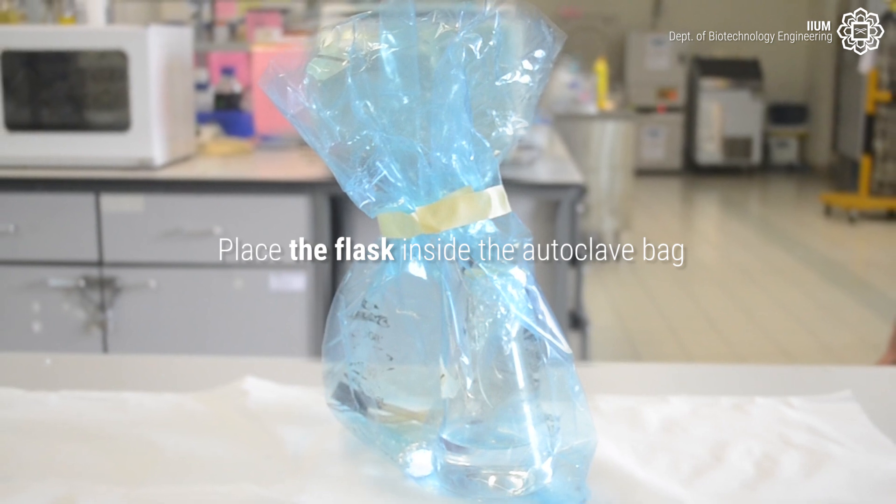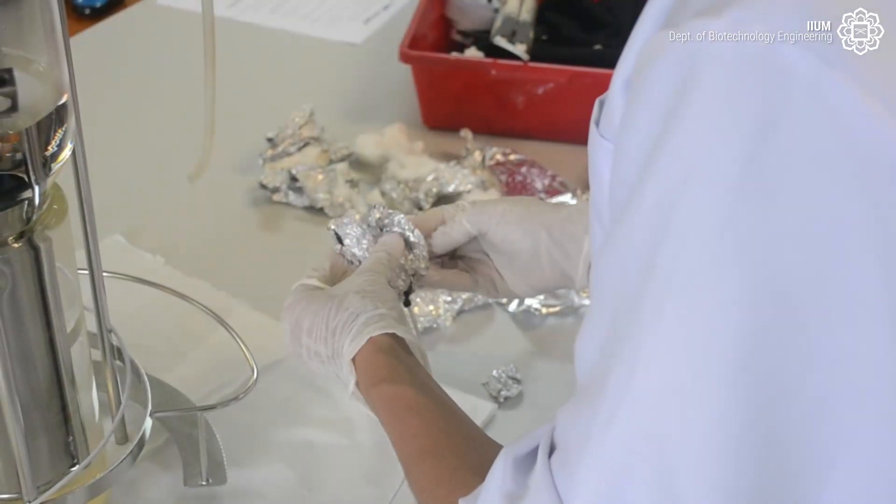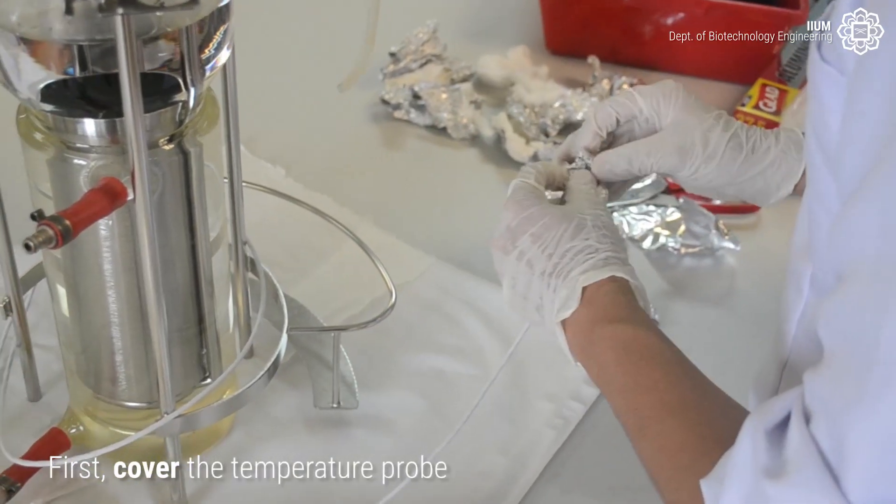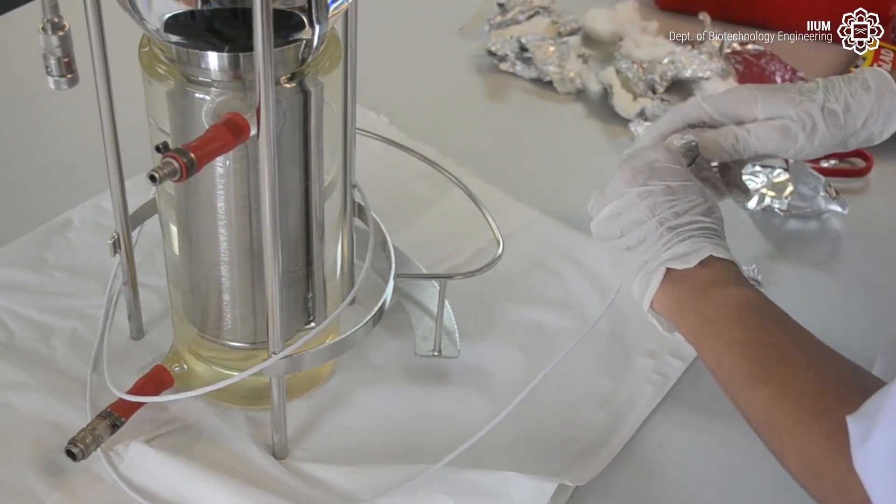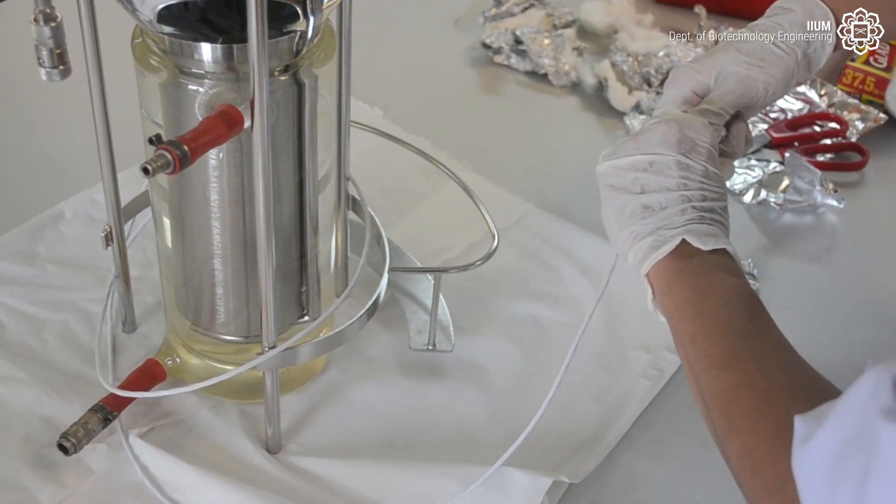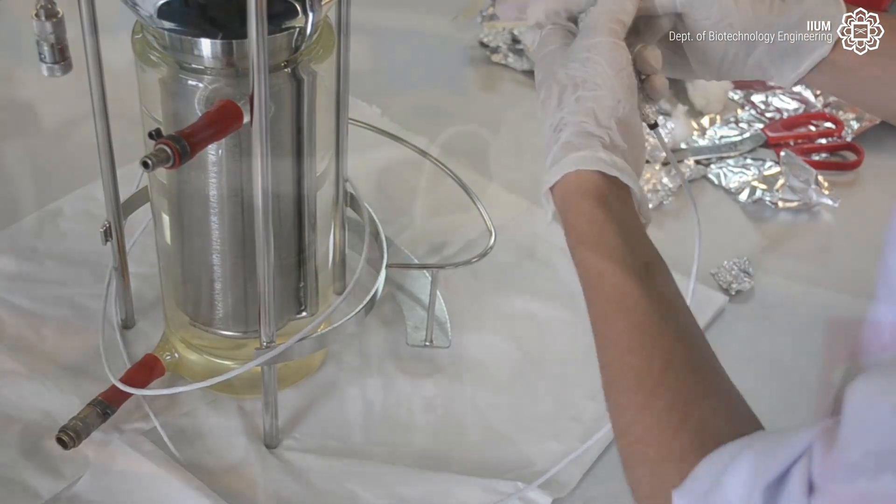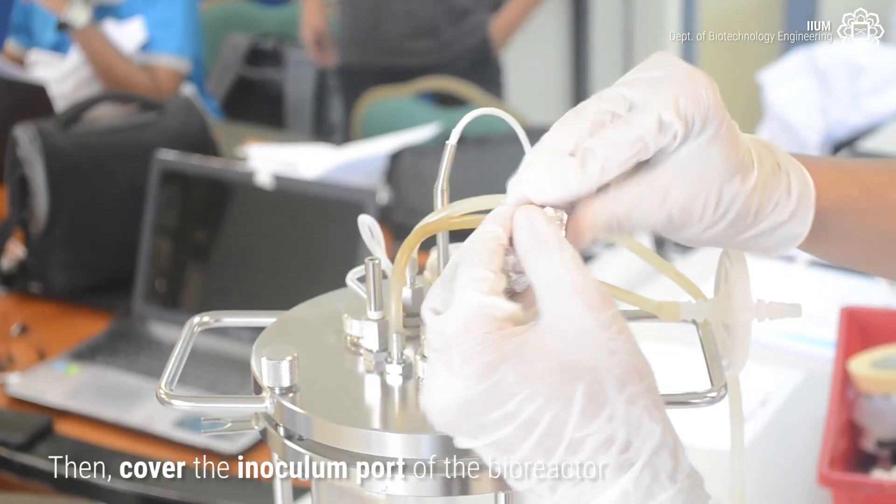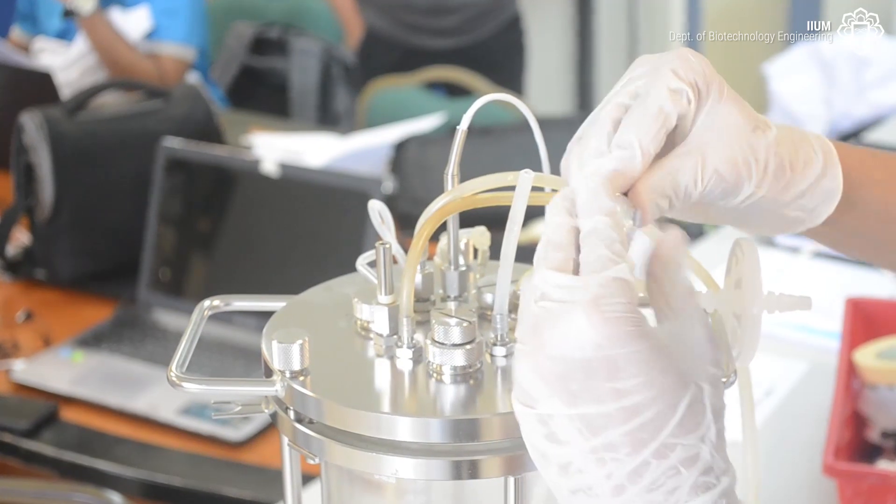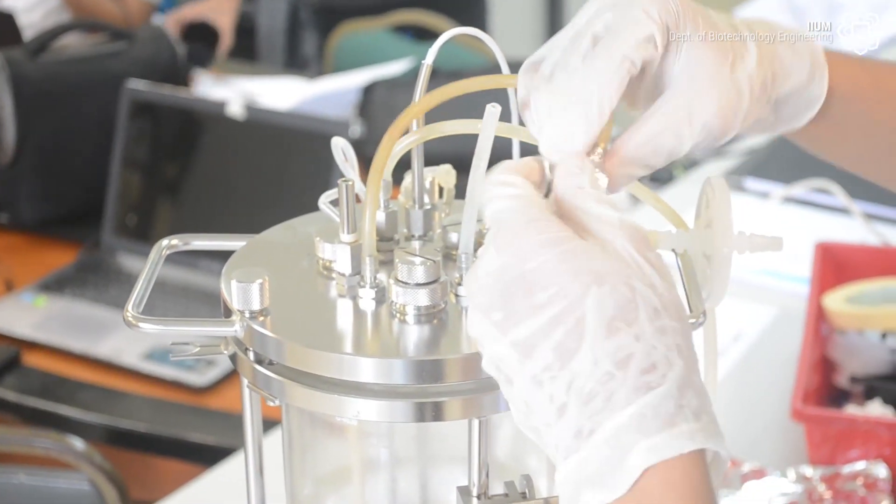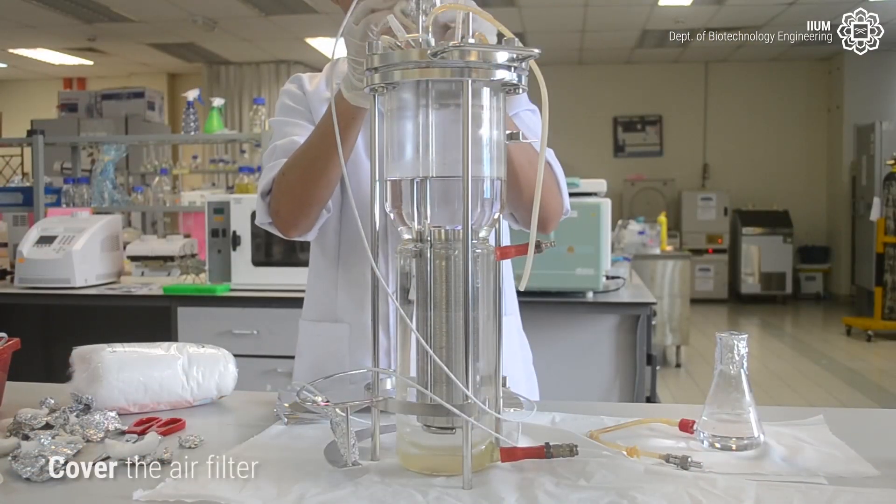Place the flask inside the autoclave bag. Then prepare the photobioreactor. First, cover the temperature probe. Then cover the inoculum port. Cover the air filter.